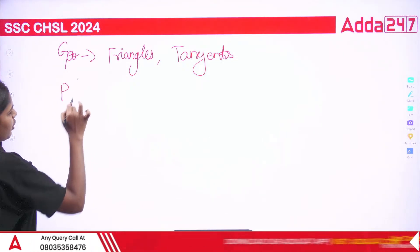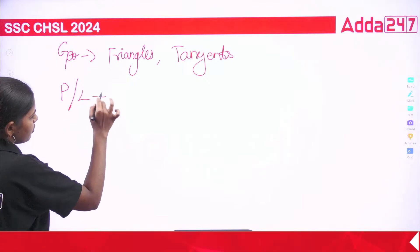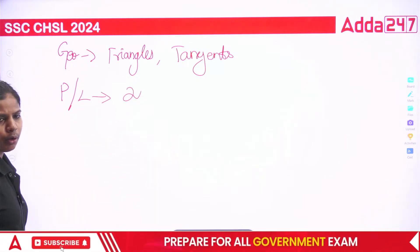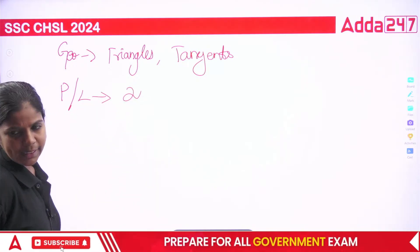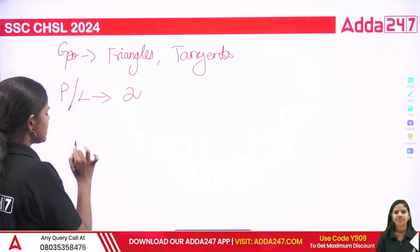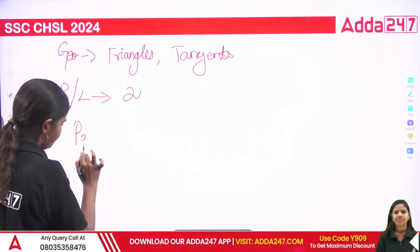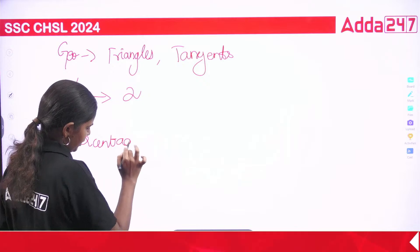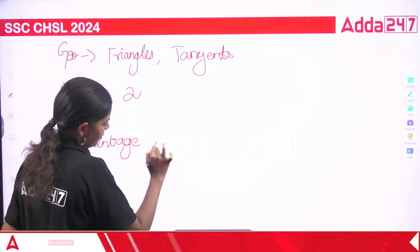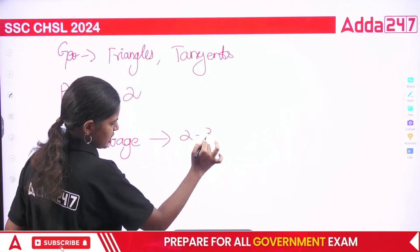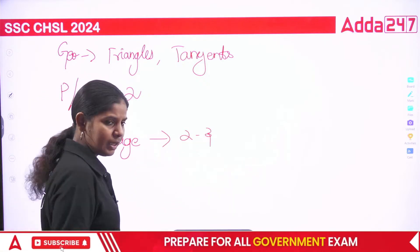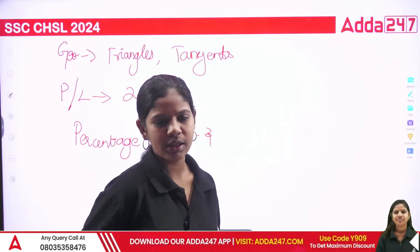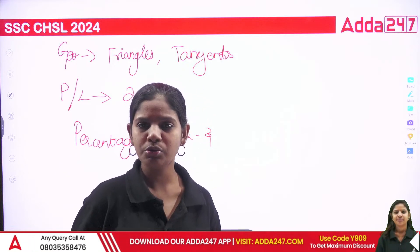Profit and Loss - add the percentage. Percentage-based questions: this is 2 to 3 questions. There are percentage-based questions - 2 to 3 questions available.